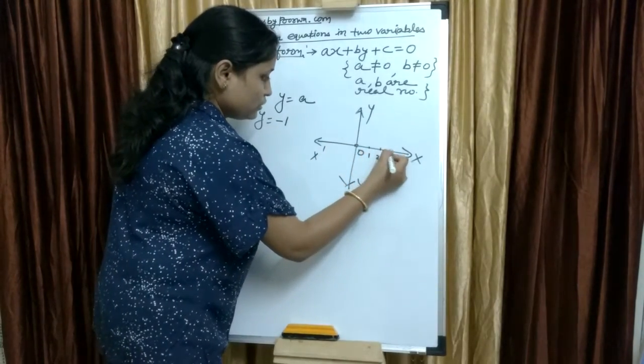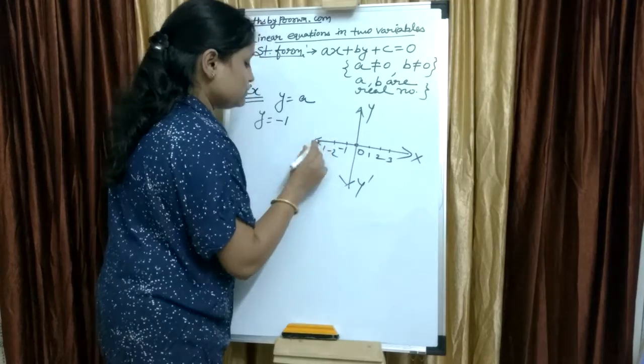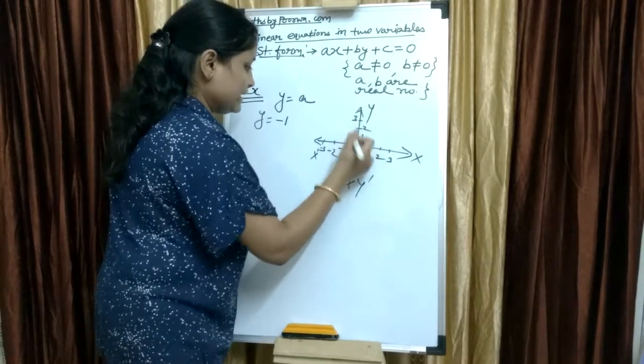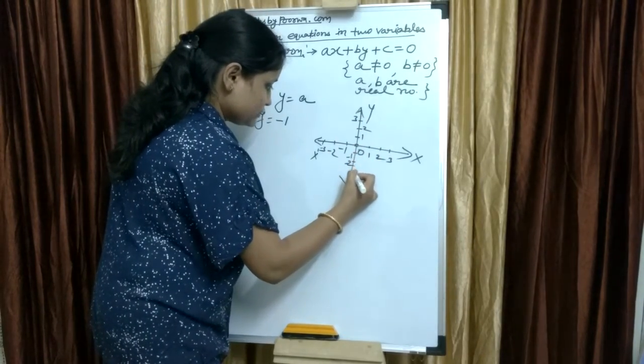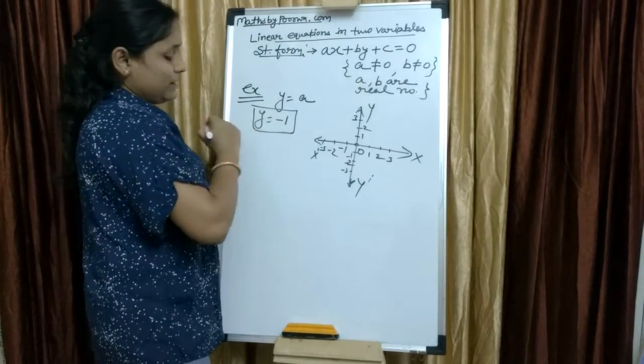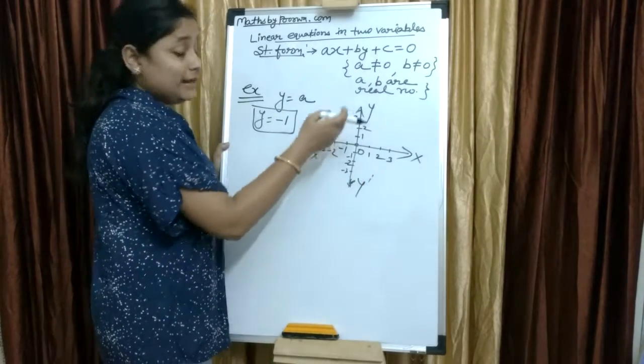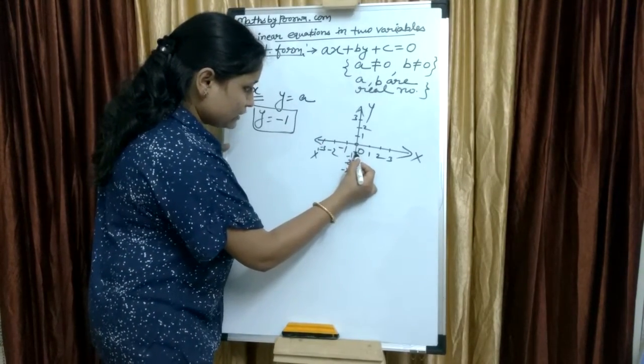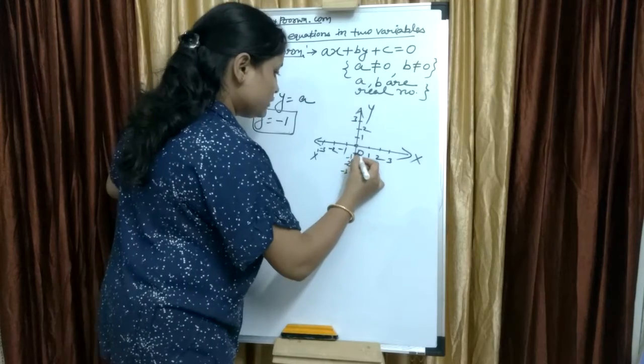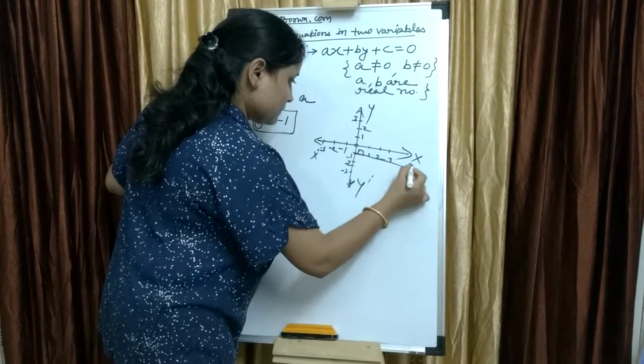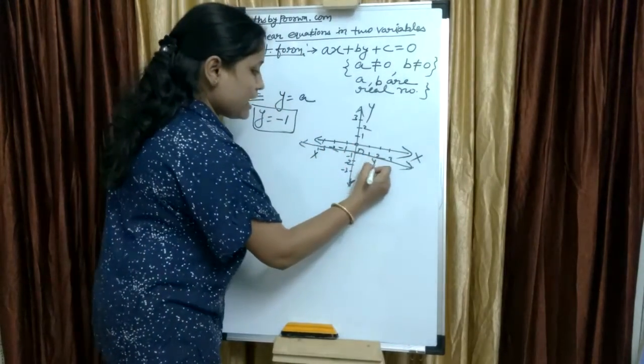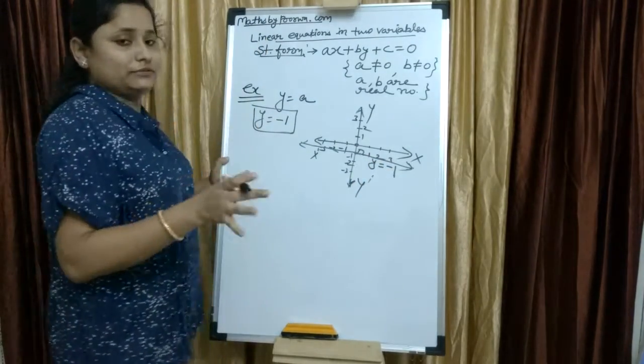So, x, x dash, y and y dash. O. So, 1, 2, 3, minus 1, minus 2, minus 3. And this is 1, 2, 3. This is minus 1, minus 2, and minus 3. Y equals to minus 1. So, Y equals to minus 1, where will it be? Negative y axis. This is the point where Y equals to minus 1. So, you have to make a line like this. This line represents Y equals to minus 1 type graph.